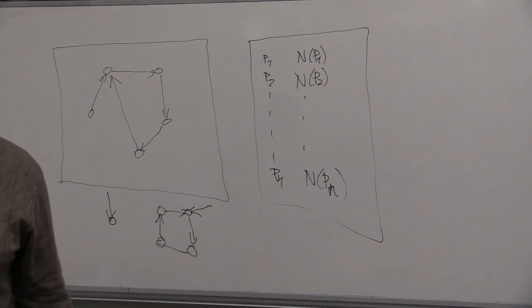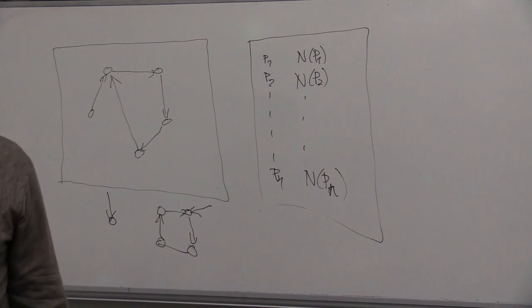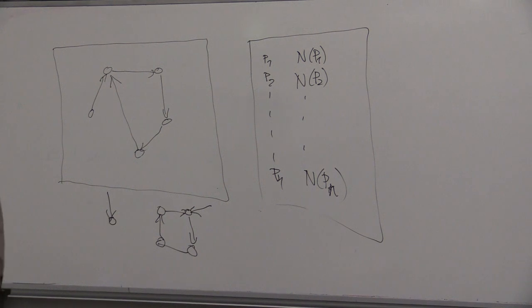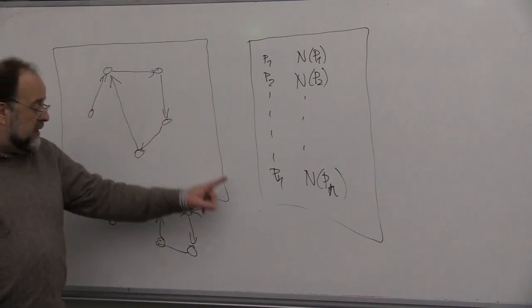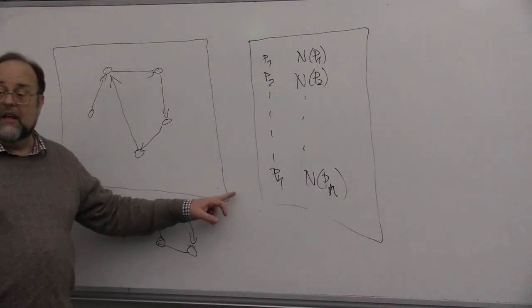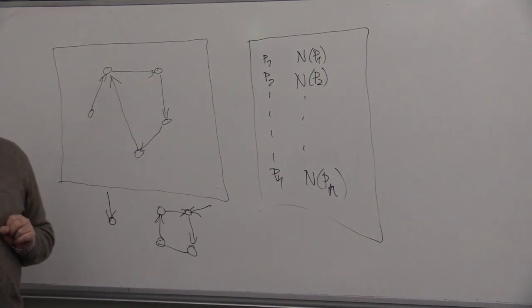So at every step, when he is at a website, he has two options. One option is to pick a link on that web page and follow it with high probability, say 85%. And then, with probability 15%, he can also jump to a totally random new web page and keep doing it, right?